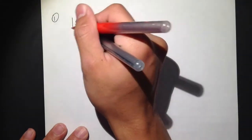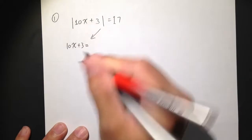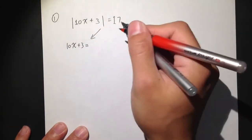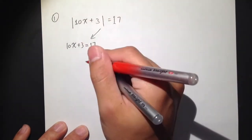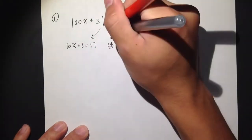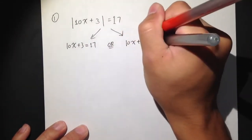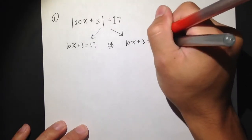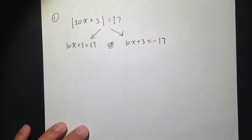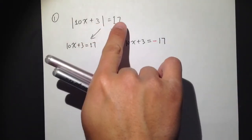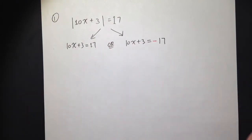The first equation: write down 10x plus 3 — the inside doesn't change — equal to positive 17. That's the first equation. Or we can also have the second case: 10x plus 3 equals negative 17. So we break down the absolute value equation into two normal equations and solve them normally.